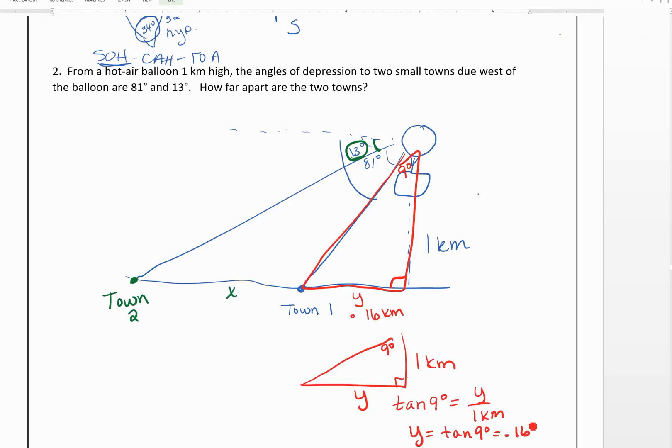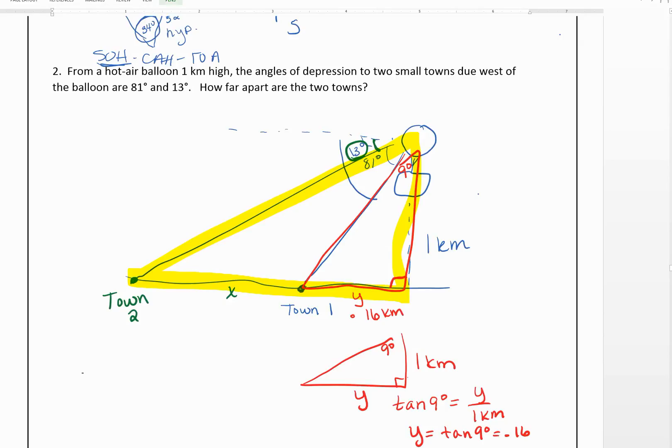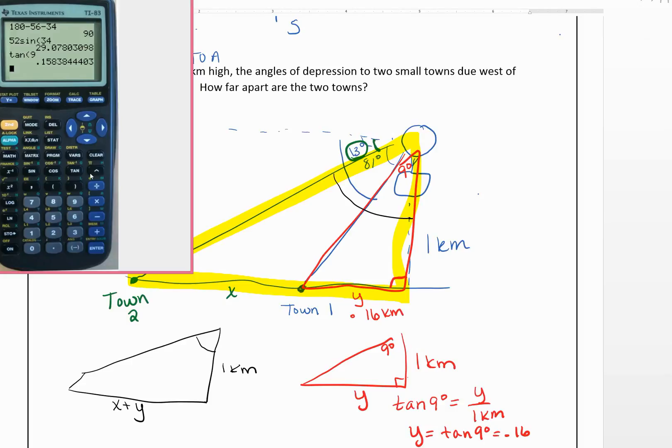Now, we need to look at kind of the big triangle. So this big triangle, well, this down here would be X plus Y. This is still 1 kilometer. And this angle, well, it was an angle of depression of 13 degrees. So this angle in the triangle would be 90 minus 13, which is 77.